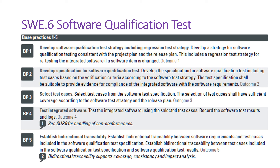BP4 talks about testing the integrated software. We need to execute all the test cases against the integrated software and record the results and logs. We need to record the results in Excel or any other bug management tool or test management tool. BP5 talks about establishing bi-directional traceability.